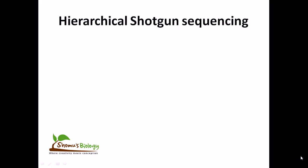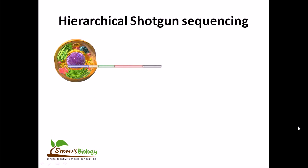In this animation, we'll be learning the process of hierarchical shotgun sequencing. As the term suggests, in this process we'll be seeing the sequencing of DNA using a hierarchical fashion. The first step is to isolate the DNA from a eukaryotic cell to get the DNA segment.